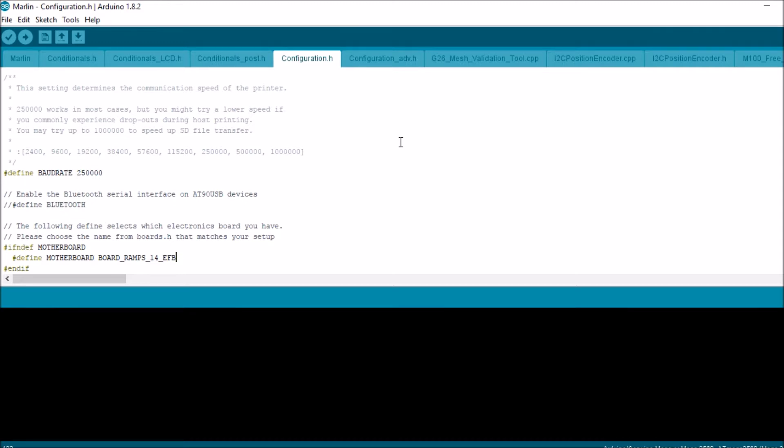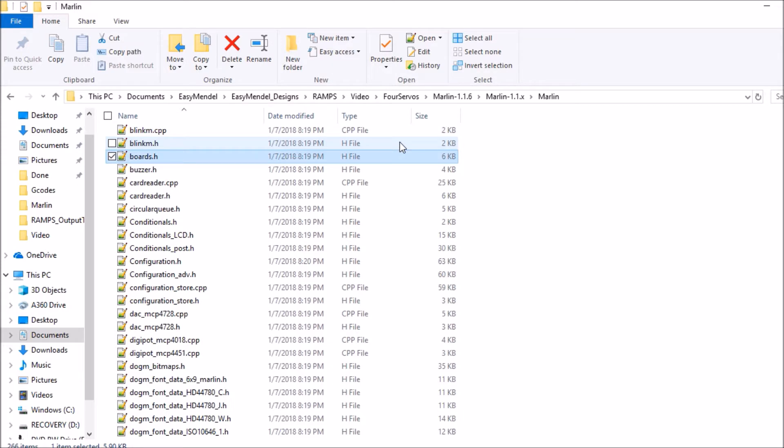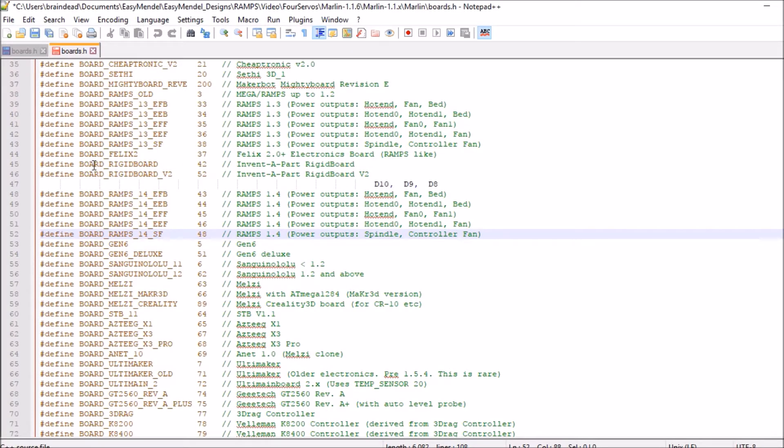So let's go take a look at the boards.h file. In boards.h we have the configurations outlined right here. At the top I placed D10, D9, and D8 just for reference purposes. Normally this would not be there. Our very first configuration that we see as default is EFB.